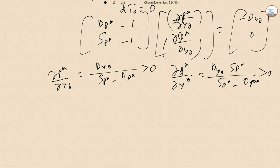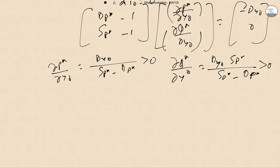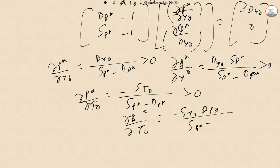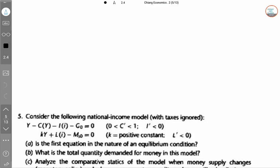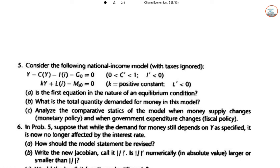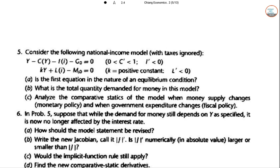When T₀ is the disequilibrating factor, setting dY₀ = 0, we get ∂P*/∂T₀ = −S_{T₀} / (S_{P*} − D_{P*}) > 0, and ∂Q*/∂T₀ = −S_{T₀} · D_{P*} / (S_{P*} − D_{P*}) < 0.